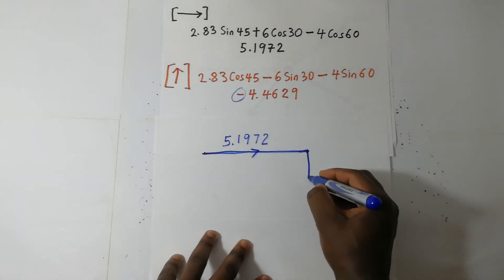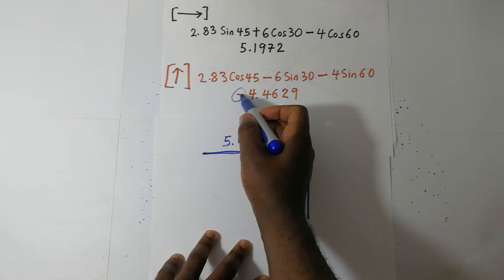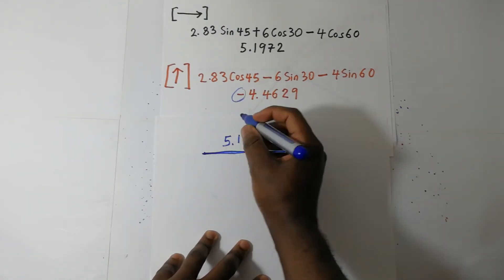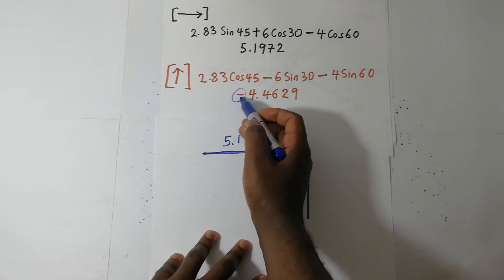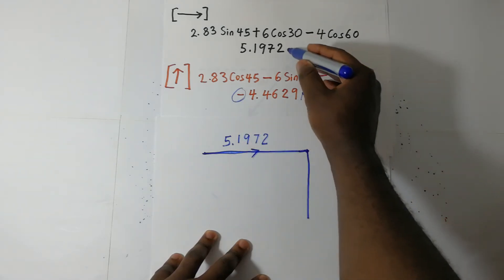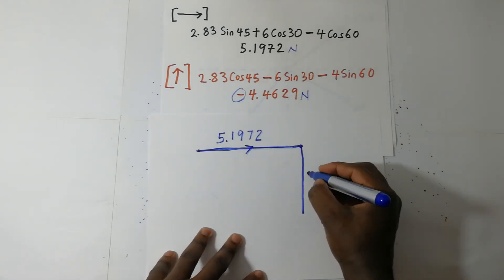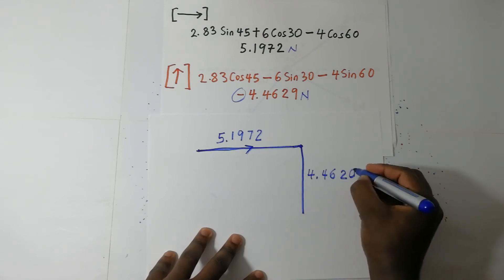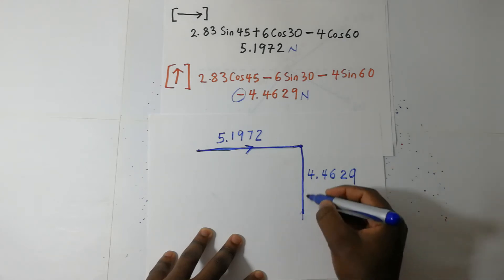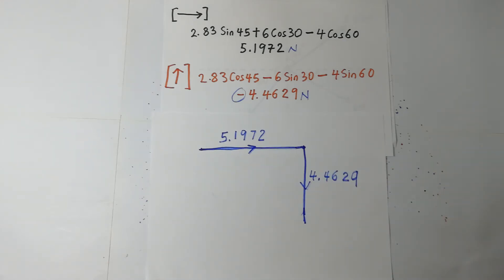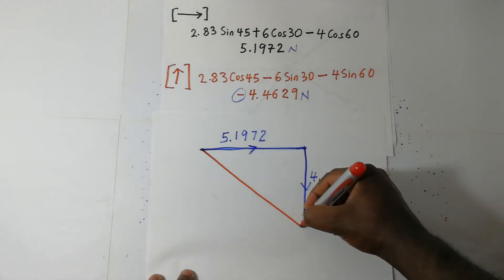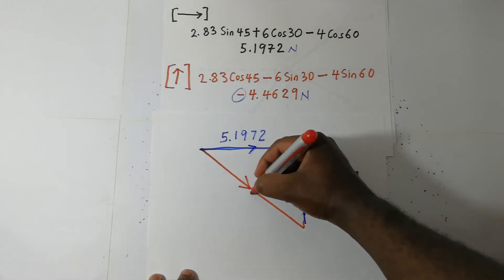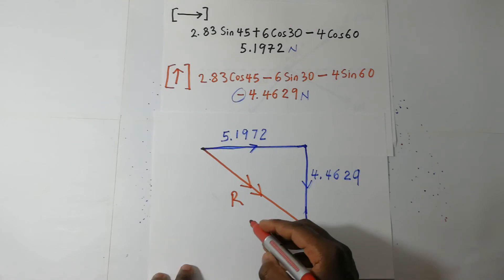Remember, these signs are just giving us the direction of the forces. This is the magnitude of the force; the sign gives us the direction. These are forces in Newtons — so this is 4.4629 Newtons acting in that direction downwards. After getting that, our resultant force runs from beginning to where the forces end. So this is the resultant force that we are mandated to find.